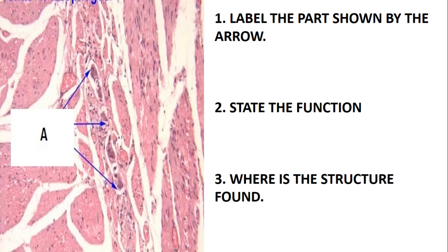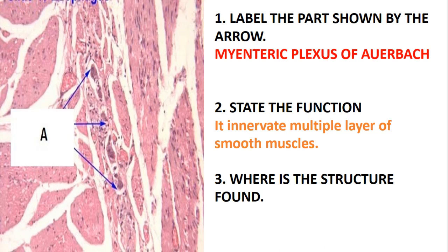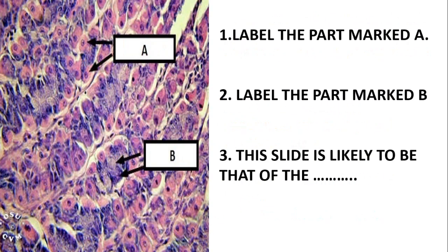Label the part shown by the arrow, which is the lymphatic nodule known as Peyer's patches. Moving on — this next slide shows a nerve structure, existing between the longitudinal and circular muscle layers. This is just the myenteric plexus of Auerbach. Its function is to innervate multiple layers of smooth muscle, and this structure is mostly found in the gastrointestinal tract.